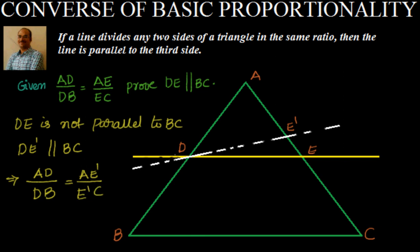The basic proportionality theorem states that if a line is drawn parallel to one side of a triangle, then it intersects the other two sides at distinct points such that the ratio is the same. So, we have taken DE' as parallel to BC, which means according to the theorem it should be AD by DB equal to AE' by E'C. But we already know that AD by DB is equal to AE by EC.